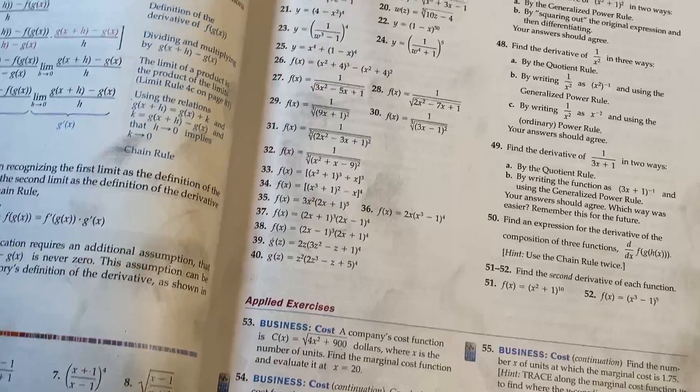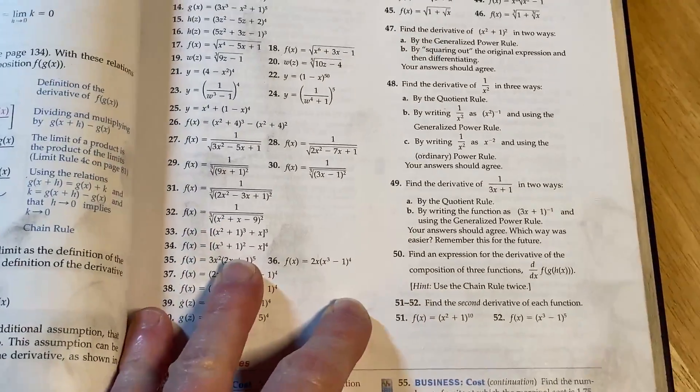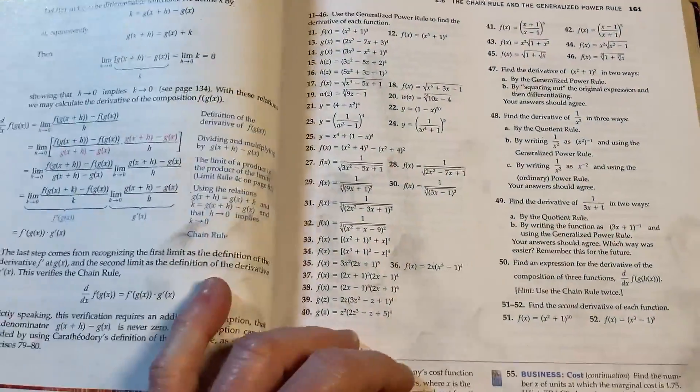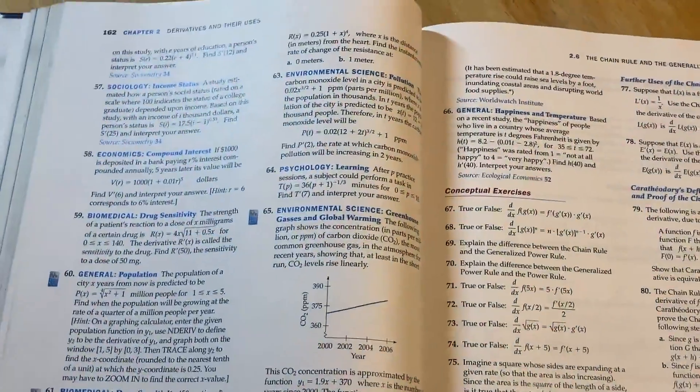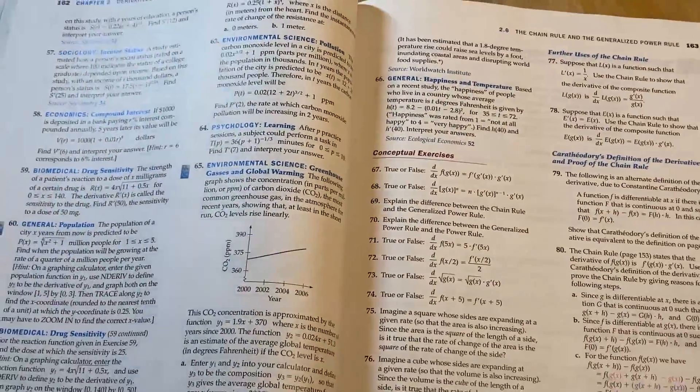And then you get answers in the back of the book so you can check your answers. So this book is amazing. If you can find a copy get it. I don't know how widely available it is. I don't know if it's still in print. But it's definitely I think the easiest calculus book that I own. I don't think there's an easier one.